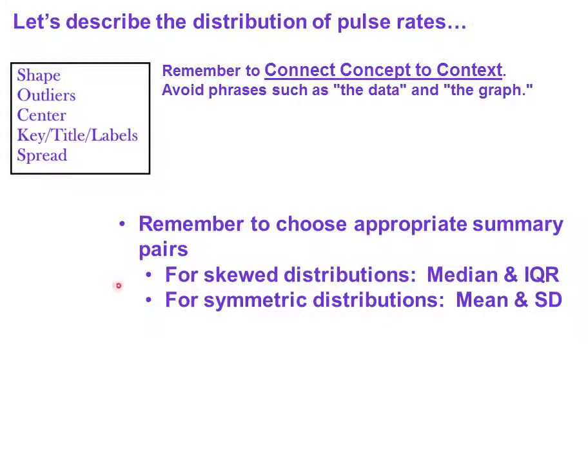Lastly, remember to choose appropriate summary measures. For skewed distributions you must use the median and the IQR. For symmetric distributions you must use the mean and the standard deviation.